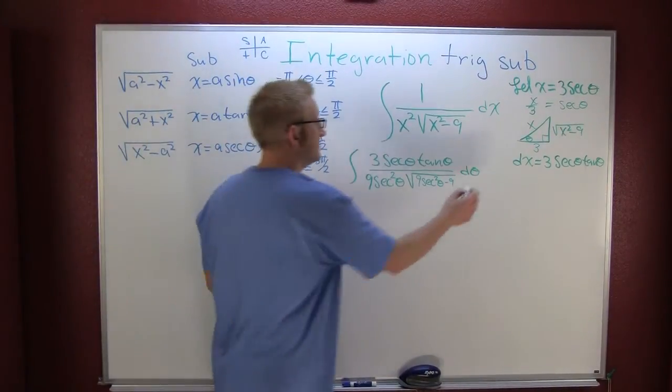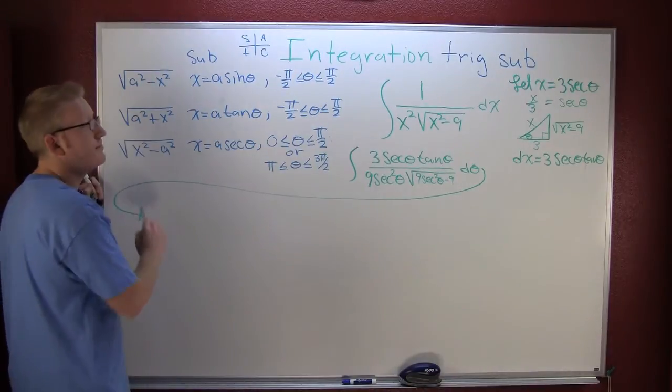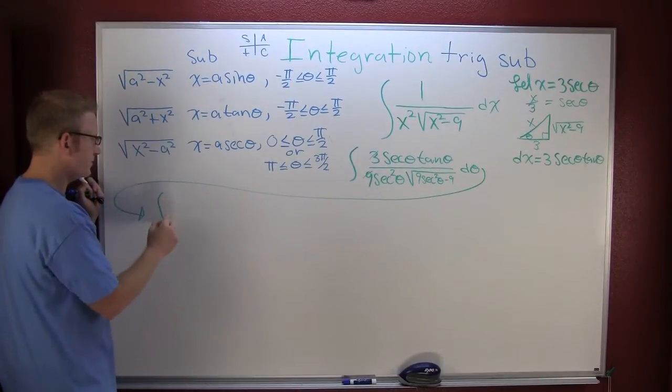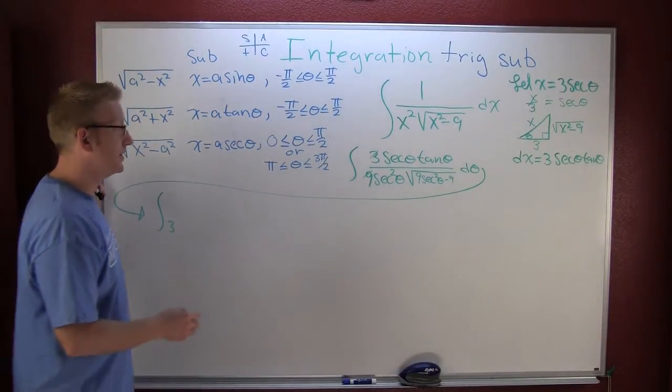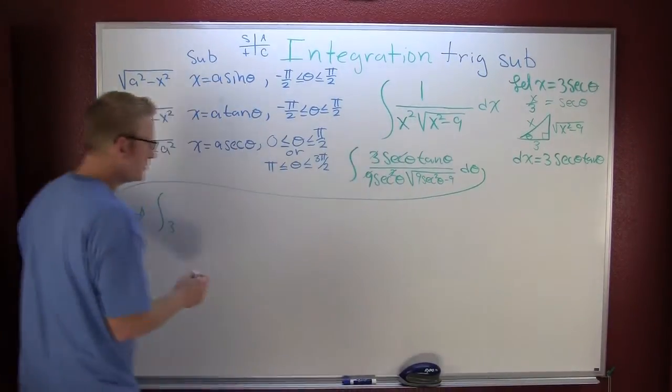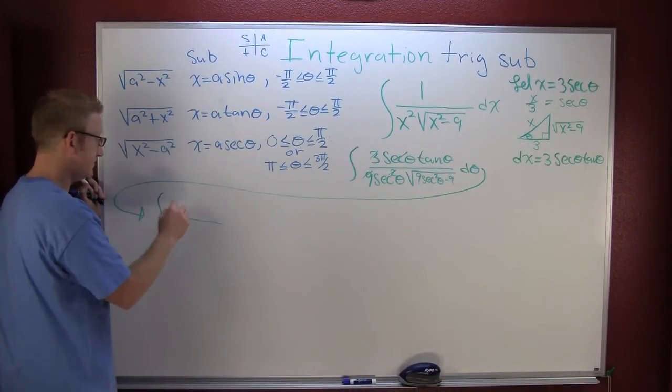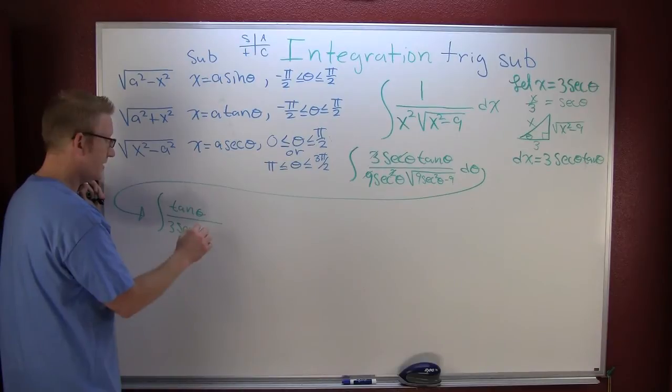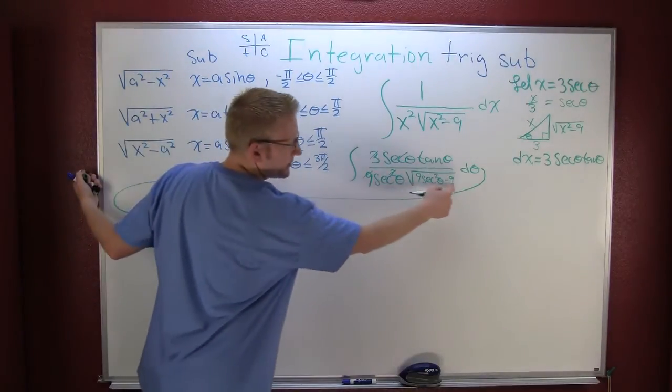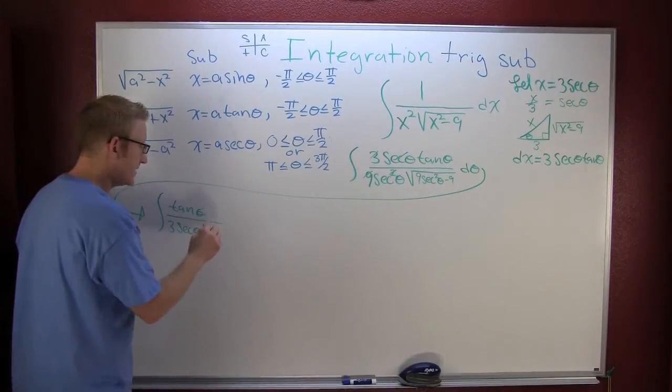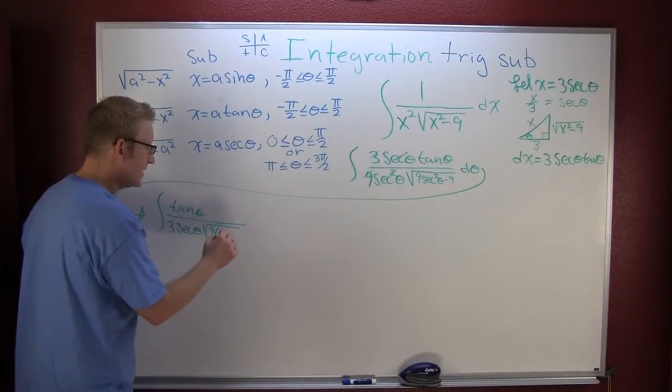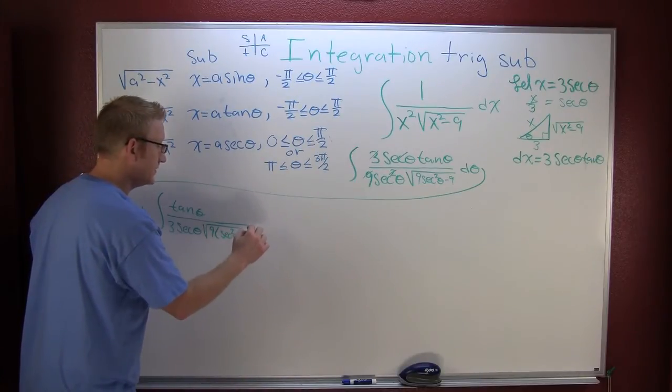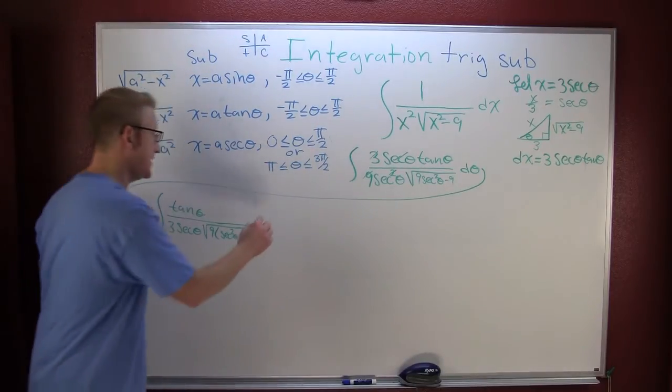So now I got some trigonometric manipulations to take care of. The 3 can fight the 9, so I got a 3 in the denominator. The secant can find the secant, so then I have a tangent theta in the numerator and a secant theta in the denominator. And then can I factor out a 9? I will. 9 times secant squared theta minus 1, and then I still have my d theta out there.